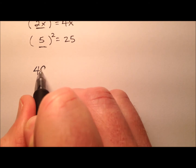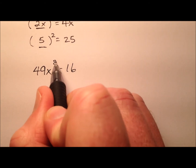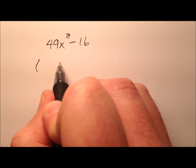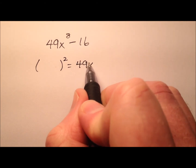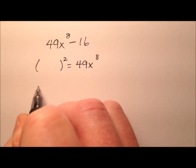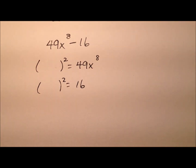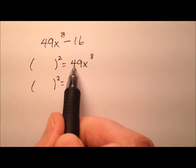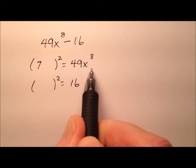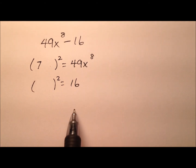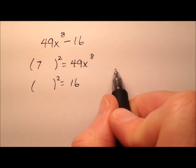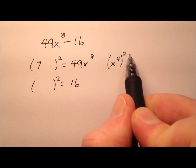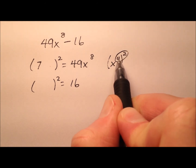Let's do 49x to the 8th minus 16. To factor this difference of squares, we ask: what got squared to give us 49x to the 8th, and what got squared to give us 16? What got squared to give us 49? Well, 7. And what got squared to give us x to the 8th? It's x to the 4th — because if you take x to the 4th and square it, the power of a power property says we multiply: 4 times 2 gives 8.